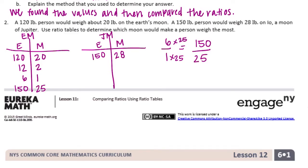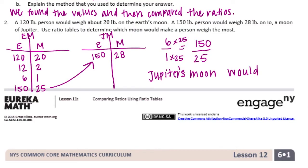Compared to Jupiter's moon, someone who is 150 pounds would weigh 28 pounds. So Jupiter's moon Io would make a person weigh more than Earth's moon.